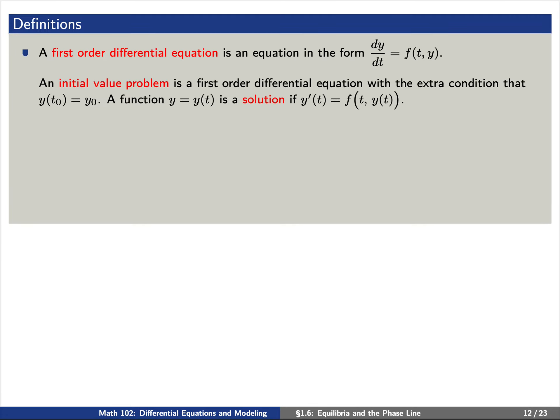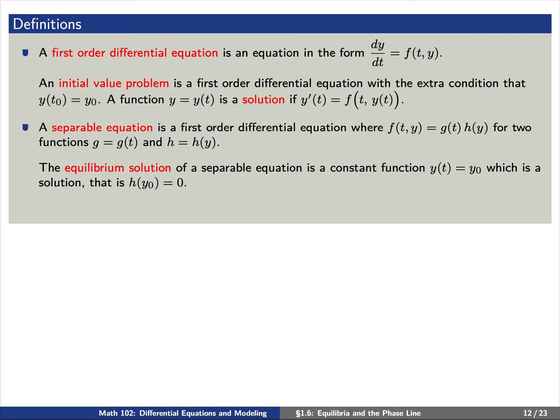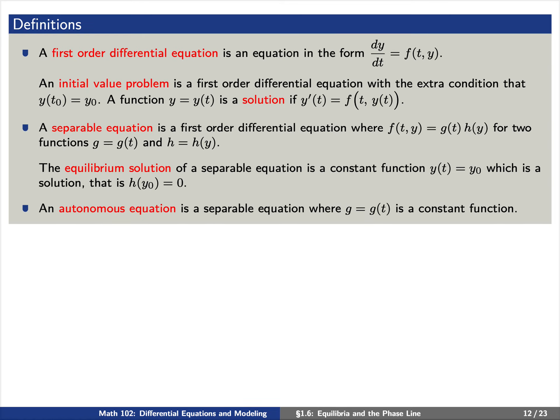First, let's review some definitions. Recall that a first-order differential equation is an equation of the form dy/dt equals f of t, y. An initial value problem is a first-order differential equation with the extra condition that y(t₀) equals y₀. A function y(t) is a solution if y'(t) equals f(t, y(t)). A separable equation is a first-order ODE where f(t, y) is the product of two functions g(t) and h(y). An equilibrium solution of a separable equation is a constant function y₀ that is a solution — that is, h evaluated at y₀ equals 0. And finally, an autonomous equation is a separable equation where g(t) is a constant function.